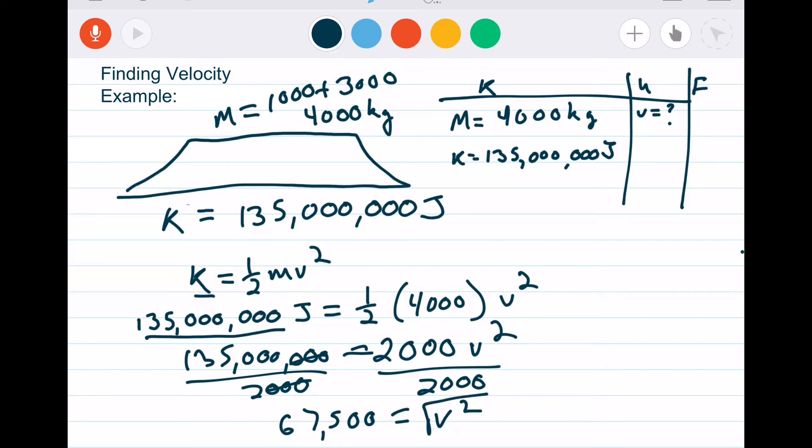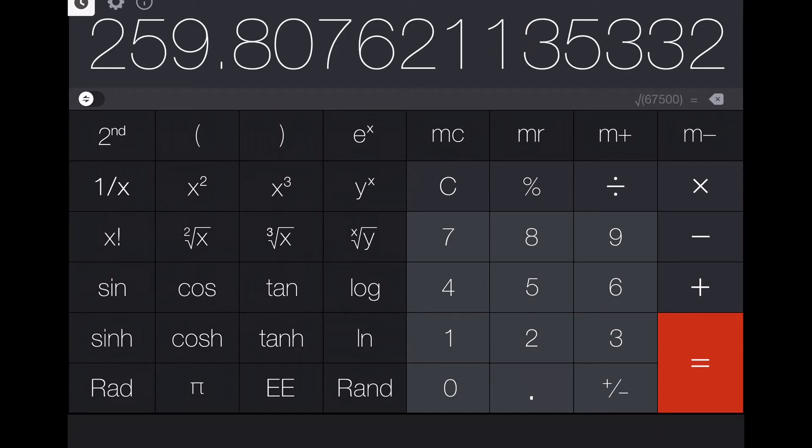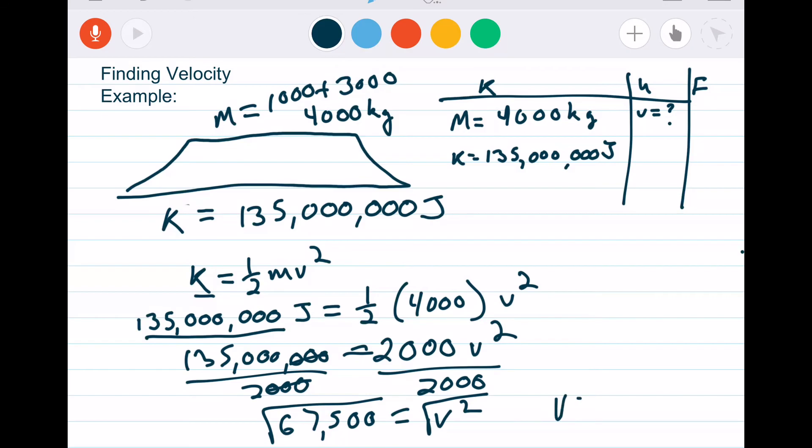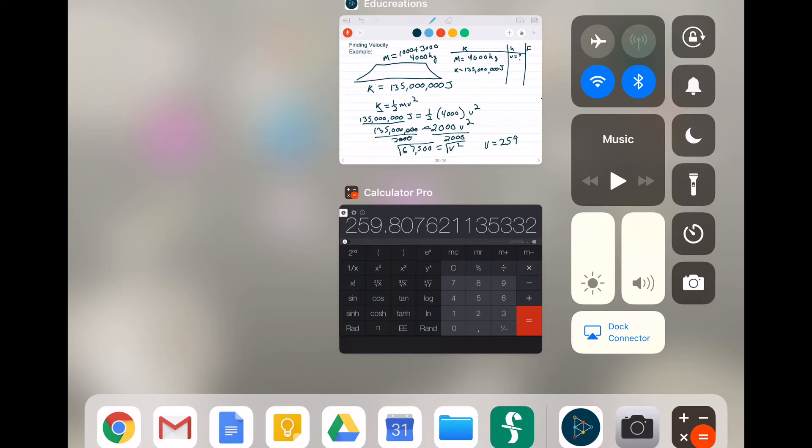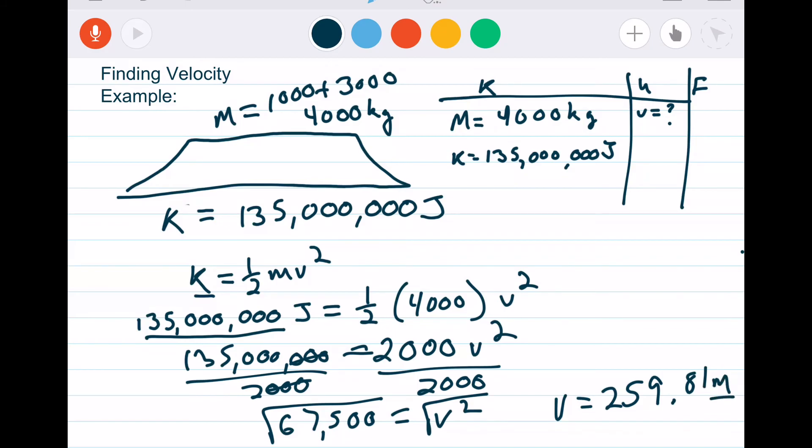Be careful when you're using one of these basic calculators, because sometimes all you have to do is hit the square root function and it tells you right off the bat. And in other calculators that would be a mistake. So just be careful of what order you're going to do that in and know how your calculator is working. So v equals 259.81 meters per second.